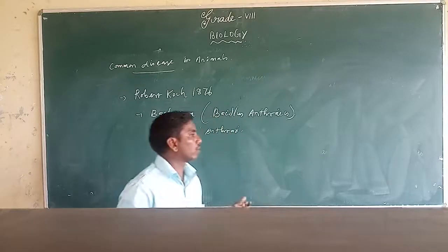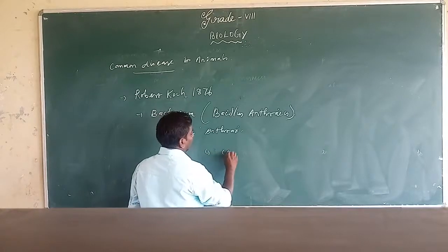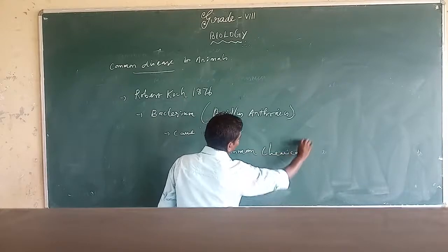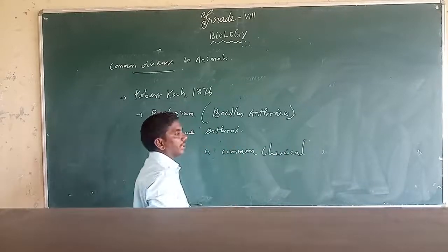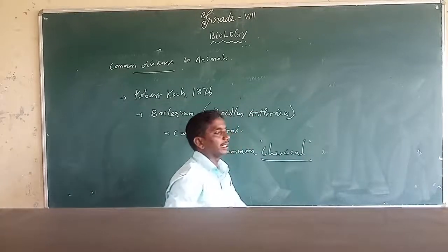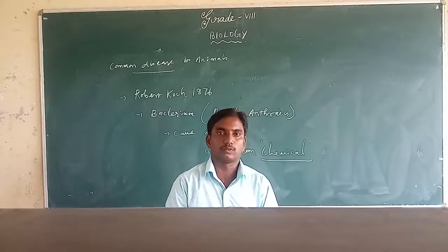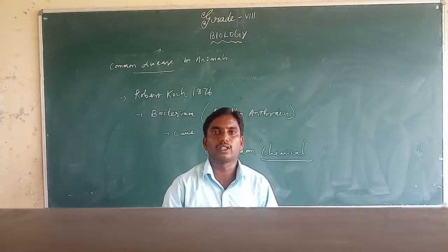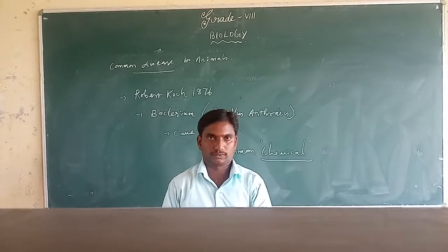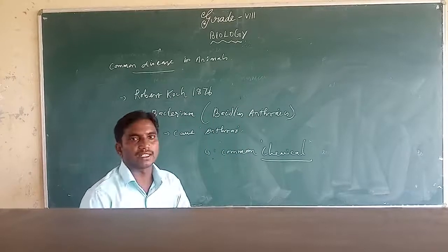To control plant diseases, we can use common chemicals. These chemicals automatically kill the microbes or microorganisms. As a result, we will get a good yield from the crops. So the common diseases in plants are citrus canker, rust of wheat, and yellow vein mosaic of okra.